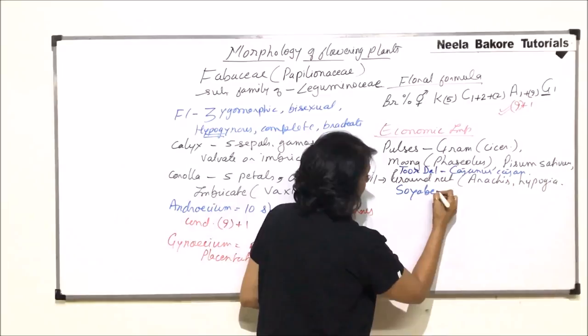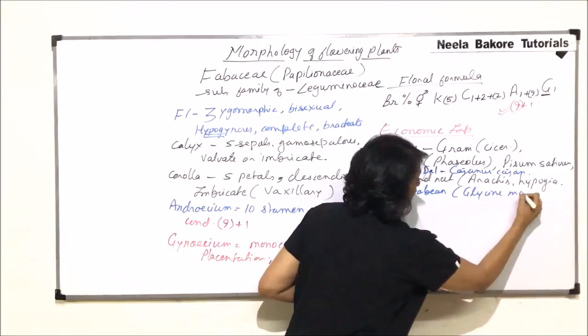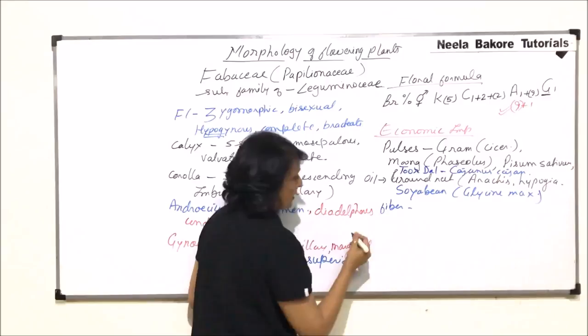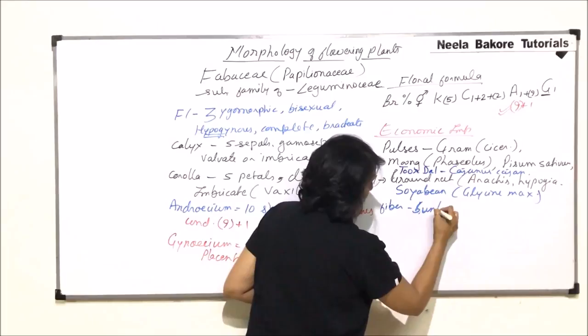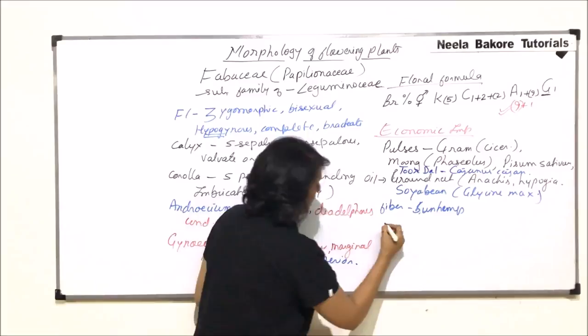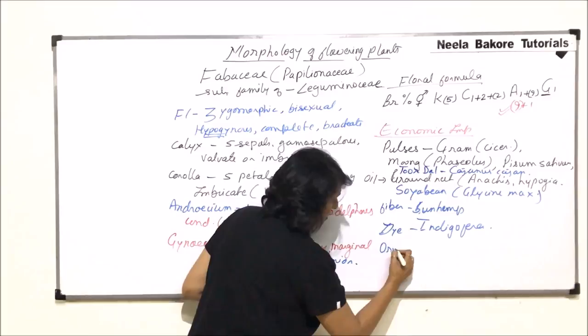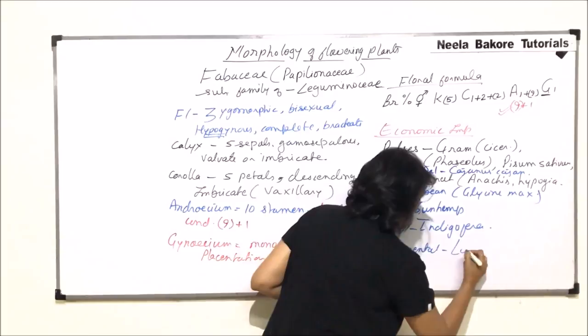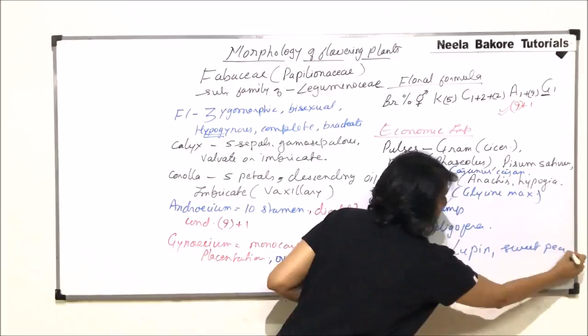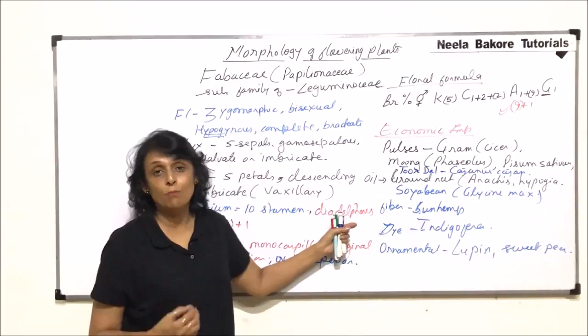Oil, mainly groundnut. Then we have soybean. It is Glycine max, that is soybean. Then we also get some fibers. The plant is sun hemp. Plant from which we get fiber is sun hemp. Oil are done. Pulses are done. And we also get a dye, and the plant is Indigofera. Certain plants are used as ornamental plants. In ornamental plants we have lupine and sweet pea.